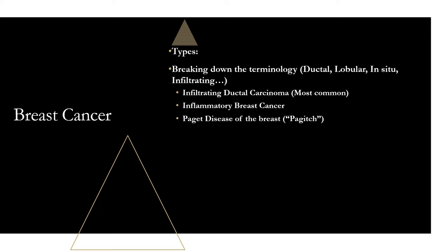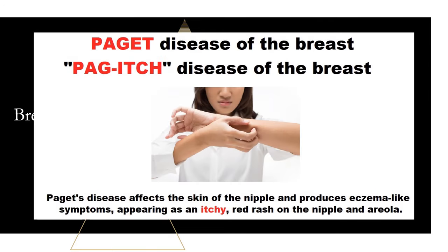Paget's disease of the breast accounts for only 1–3% of new cases of female breast cancer, but it has a unique presentation. The classic appearance is a scaly, itchy, eczematous, ulcerated lesion that begins on the nipple and spreads to the areola. The pathologic hallmark is the presence of malignant intraepithelial adenocarcinoma cells — also known as Paget cells — found within the epidermis of the nipple. Remember it as 'Pag-itch disease' to recall that itchy, eczema-like rash.